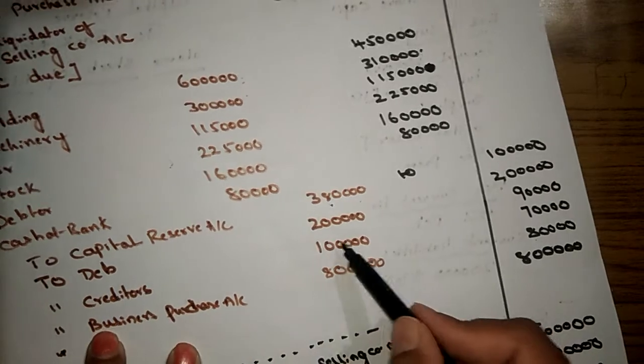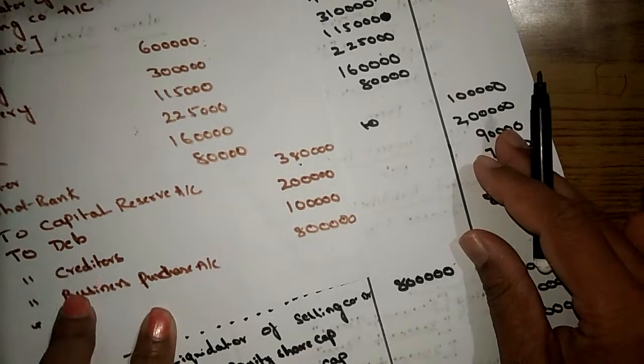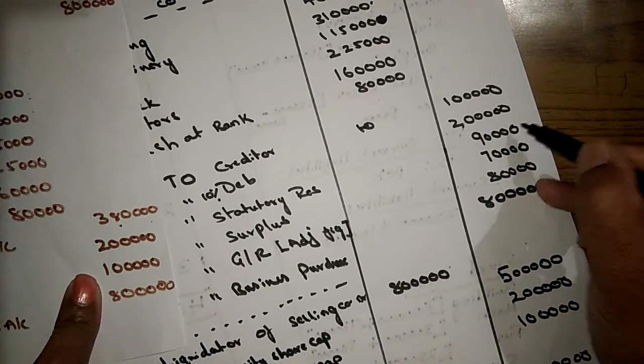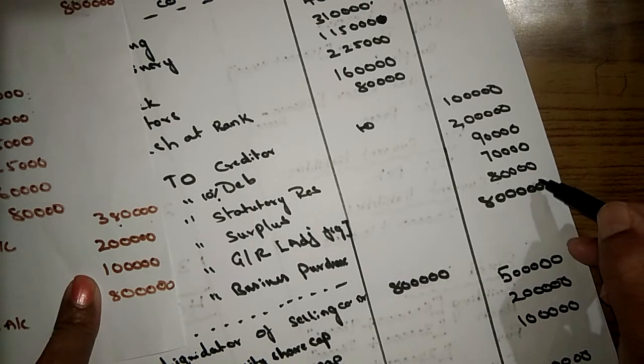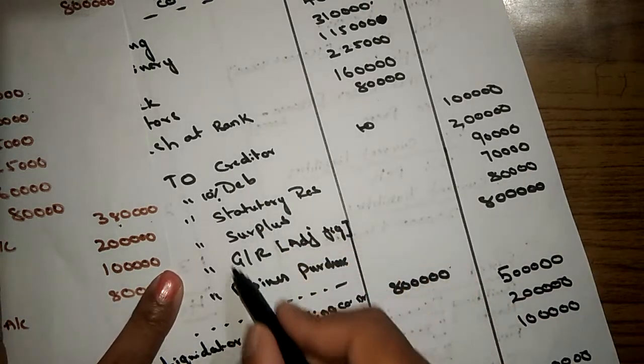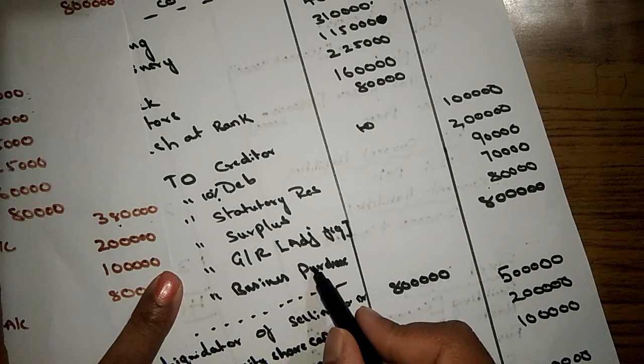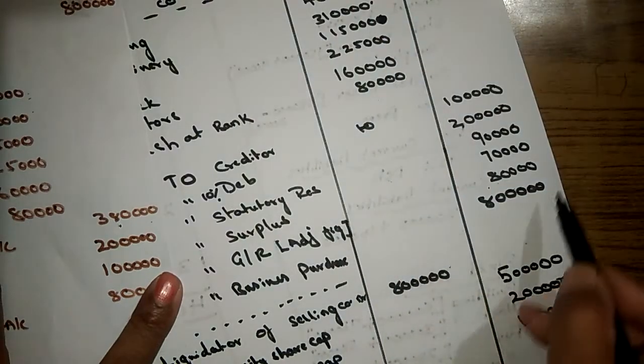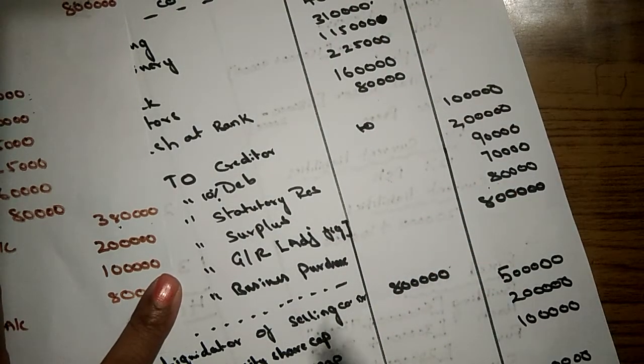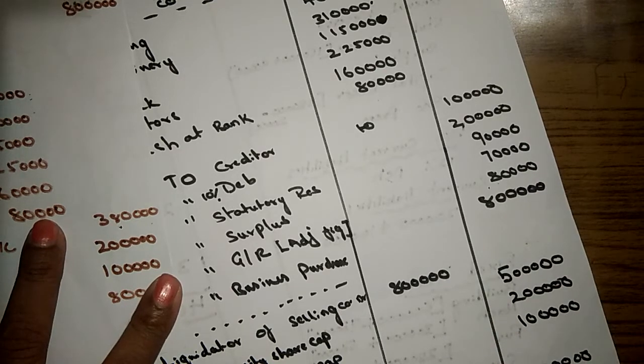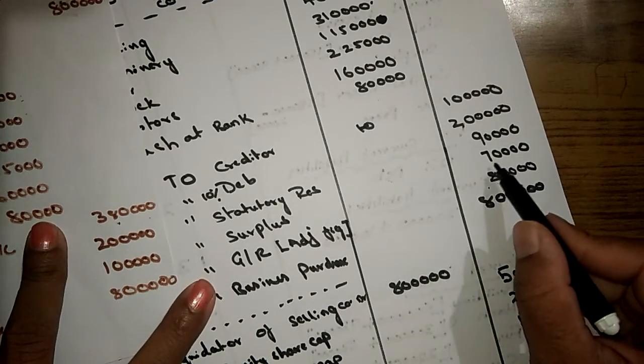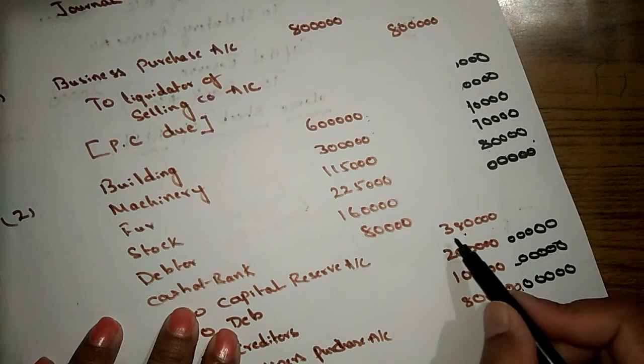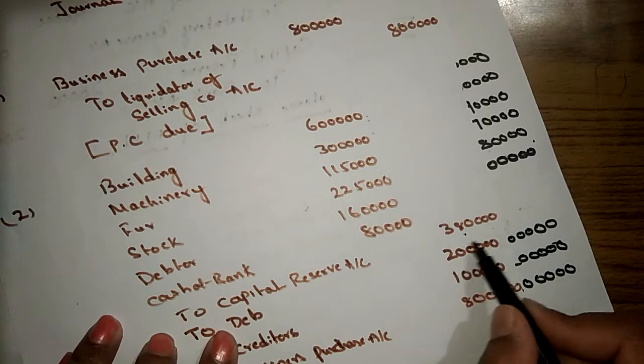Then the next entry: in liabilities we are taking debentures and creditors, the outsider liability, 2 lakhs and 1 lakh. But in this case we are also taking statutory reserve and surplus and general reserve. So we are transferring all the reserves to purchasing company because it's a pooling interest method. We need to incorporate all the assets and all the liabilities according to those five conditions. The balancing figure has been adjusted in the general reserve. In purchase method, the balancing figure was adjusted in capital reserve.